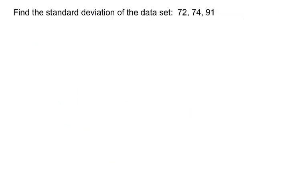So we're given the instruction, find the standard deviation of the data set 72, 74, 91. We know right away then that 72 is our x sub one, 74 is our x sub two, and 91 is our x sub three. So when we go to plug in, those are going to get plugged into the formula in those places.